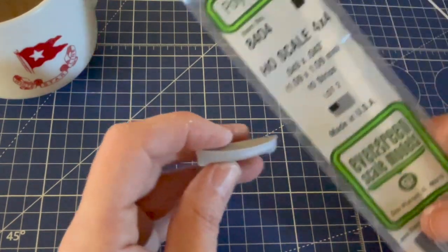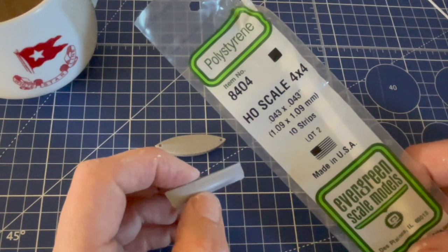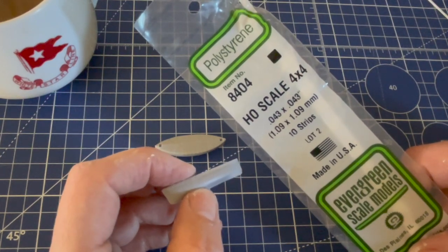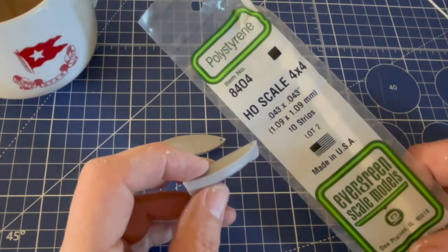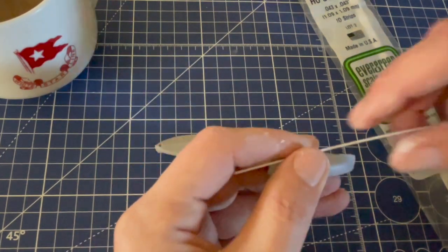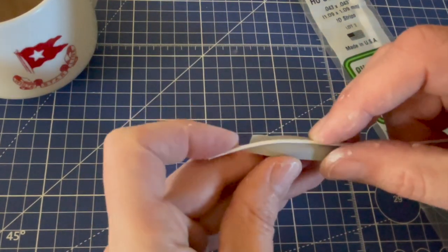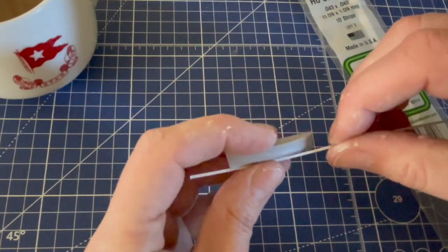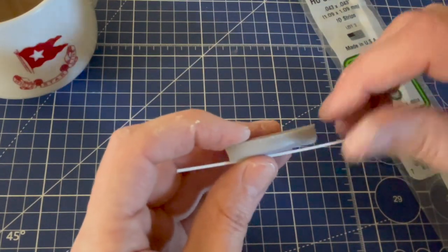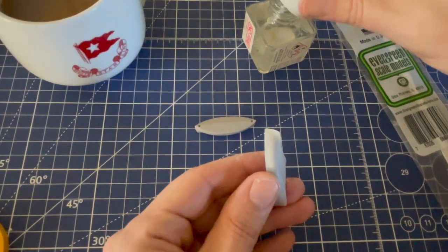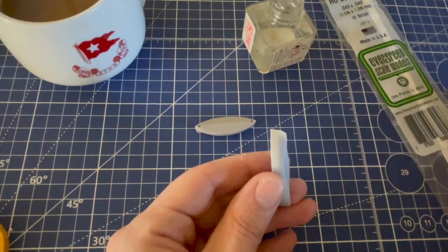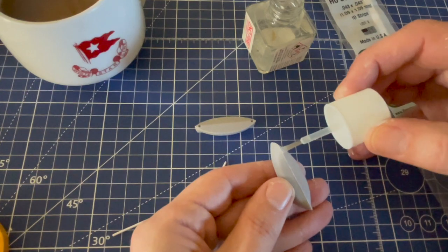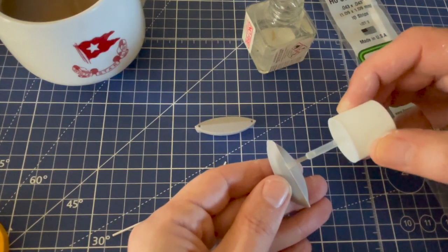What I'm going to do is I got some styrene strip, 0.043 by 0.043, and I'm just going to stick a bit around the prow. It's quite bendable so I can bend it around. I'll show you how I'll do that. I'm just going to run a little bit of glue just down the lifeboat.